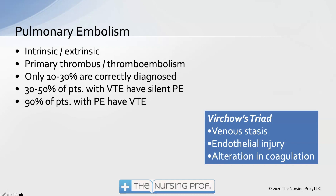About 10 to 30 percent of pulmonary emboli are correctly diagnosed. We know the rest are found on autopsy — not exactly our best diagnostic test — so we'd prefer to catch more of them so patients can be treated. About 30 to 50 percent of patients with a VTE (venous thromboembolism) will have a silent pulmonary embolism, depending upon the size of the clot and the patient's underlying pulmonary condition. About 90 percent of patients with a pulmonary embolism will have a venous thromboembolism.